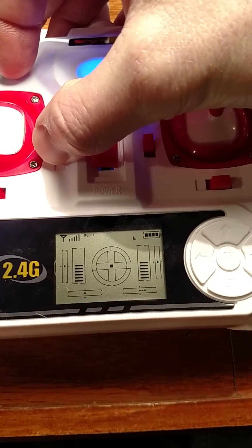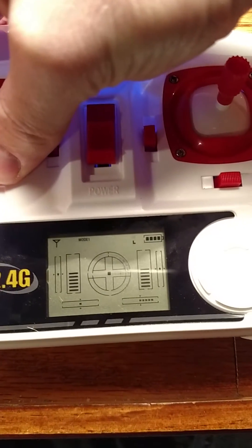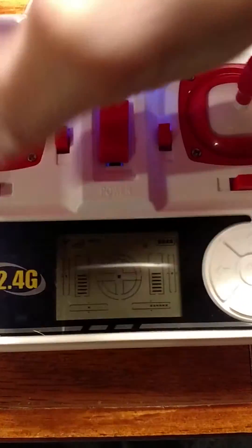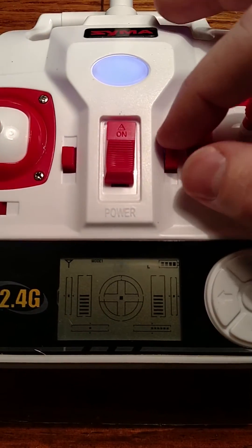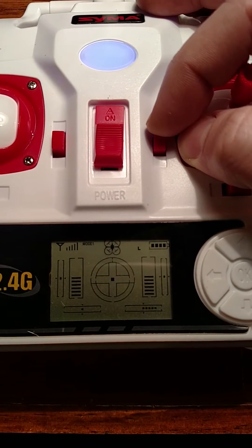So the turning trim and the up down trim don't actually change. You can see after it makes it all the way over it stops. If I do the forward back trim, that'll start pushing it back in the other direction.